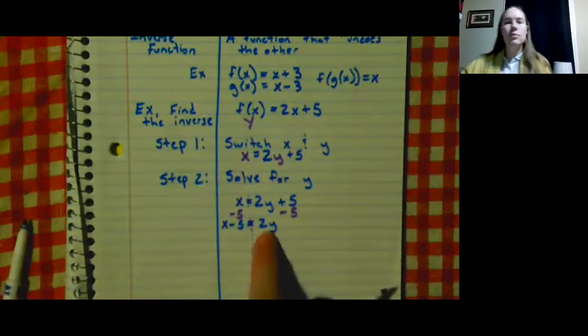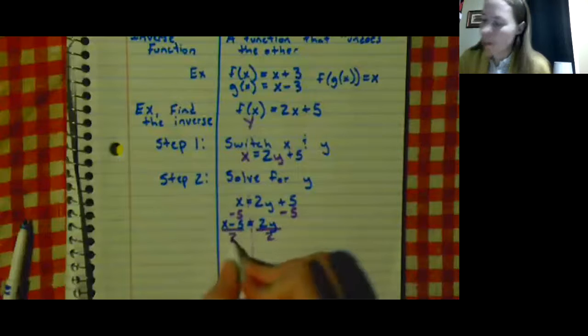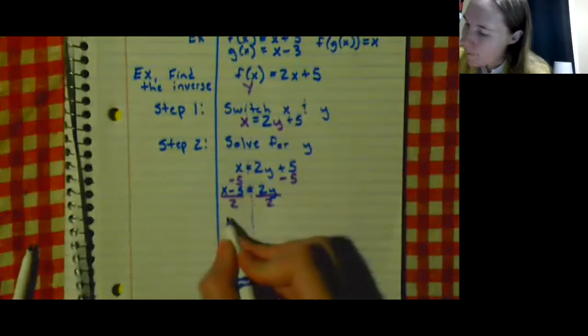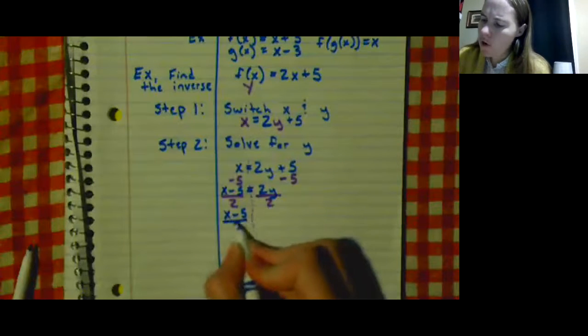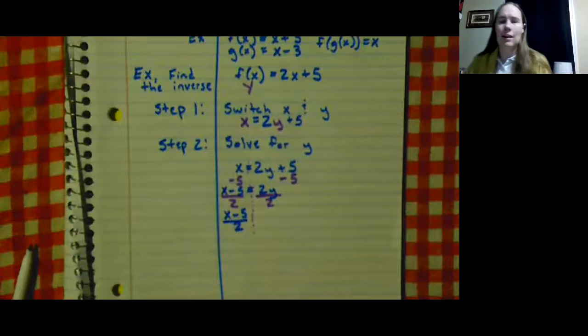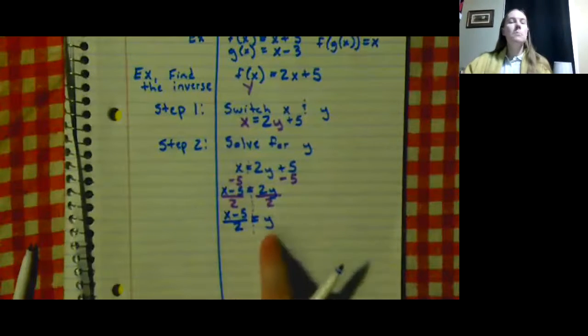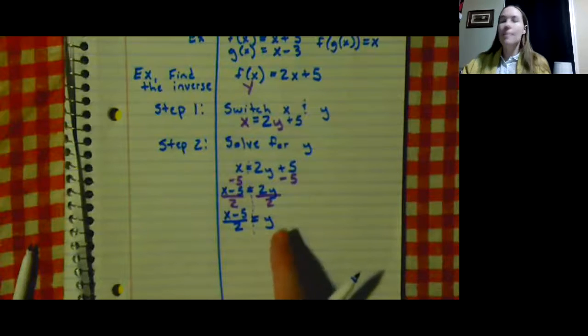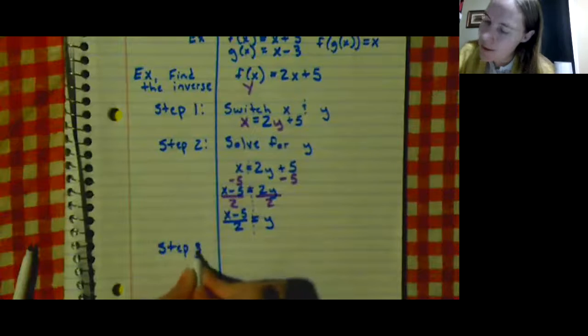Now this 2 is multiplying, so the opposite is division, so I divide each side by 2. So I have (x - 5) / 2. So this one, like whenever you're dividing, I can't actually divide anything, so I'm just going to rewrite it, equals y. My y is alone now, which means this is our last step.